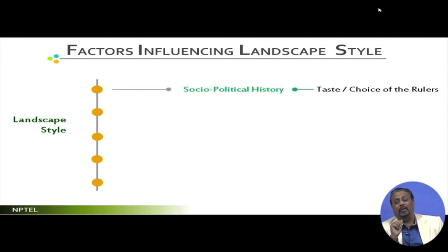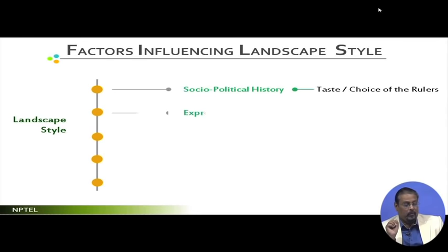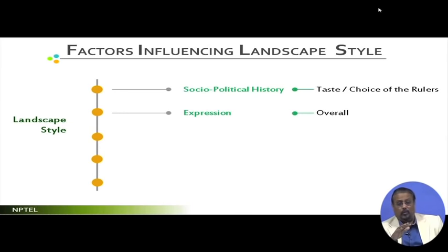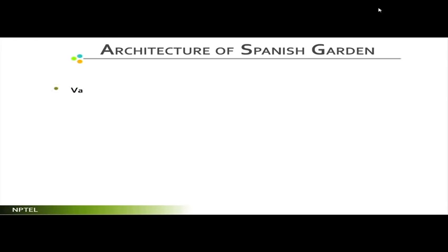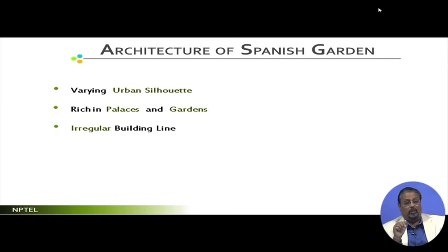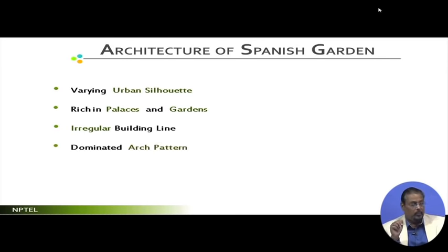Through socio-political history, these landscapes reflected the taste and choice of the rulers. At locations like the Generalife or Alhambra, rulers decided what went where. Common people had no access — they neither created nor enjoyed it. The expression was overall special, the architecture was special, and the landscape character was special. There were varying skyline silhouettes, rich palaces and gardens, and irregular building lines — all buildings other than the Cordoba Mosque had irregular building lines.